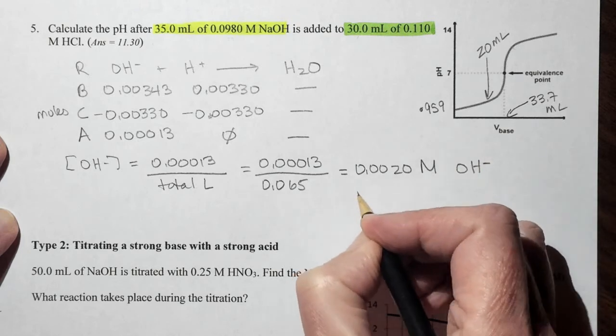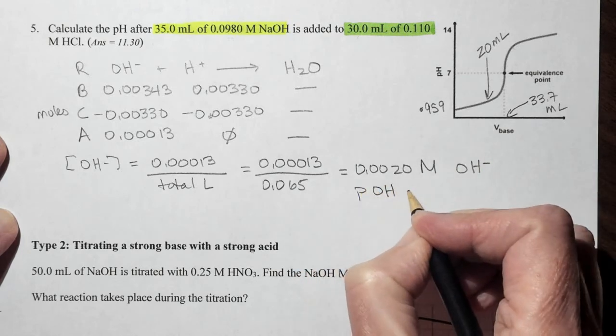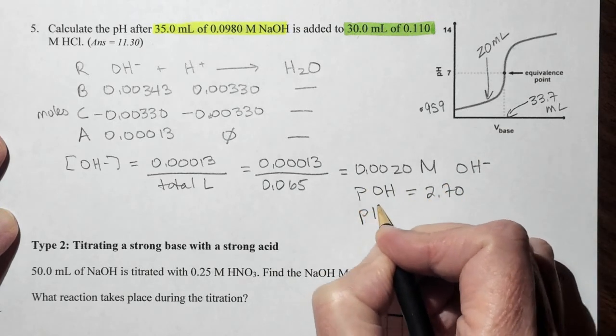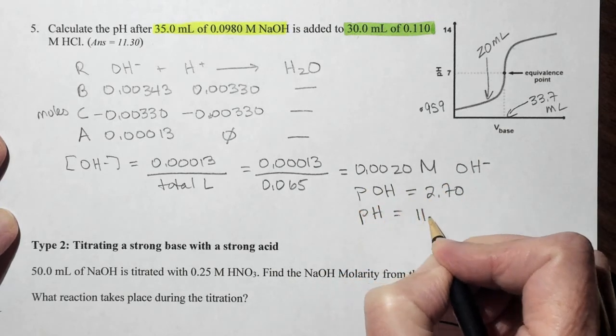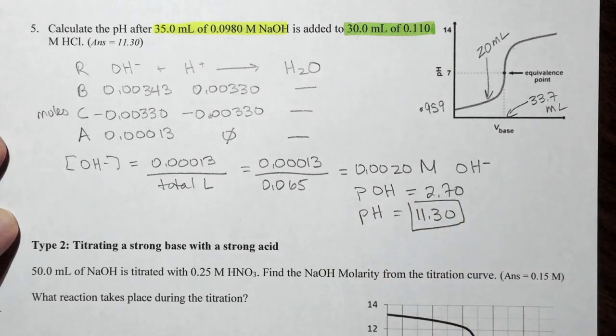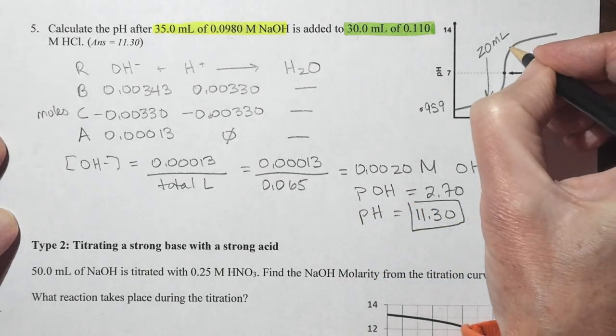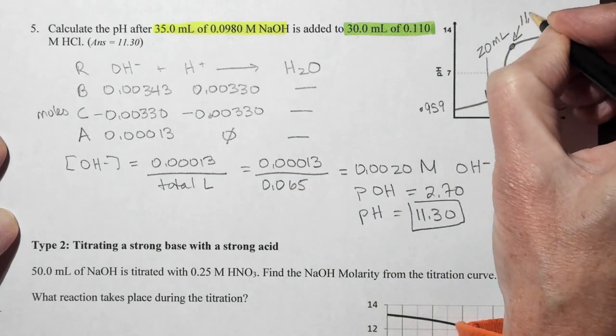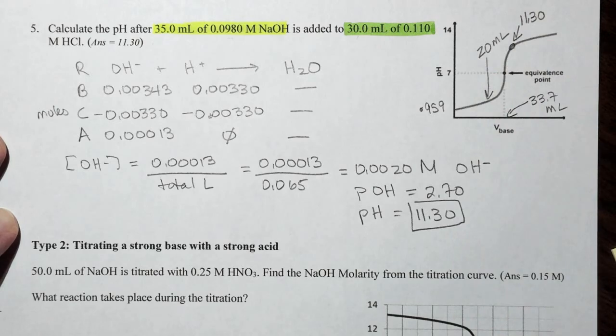So you're going to have to figure out the pOH, which is equal to 2.70, which means your pH is going to be equal to 11.30. So we have figured out now at about 35 mLs that our pH is 11.30.